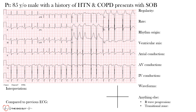Before we get started, let's review the approach we've been using to interpret the EKG. We have the patient's clinical presentation and the EKG below it. On the right side of the screen, we have a list to go through: first, regularity of the rhythm; then heart rate; rhythm origin; ventricular or QRS axis; atrial, AV, and intraventricular conduction; waveforms; and anything else such as R-wave progression and transitional zone. Then we make a final interpretation and compare to a previous ECG.